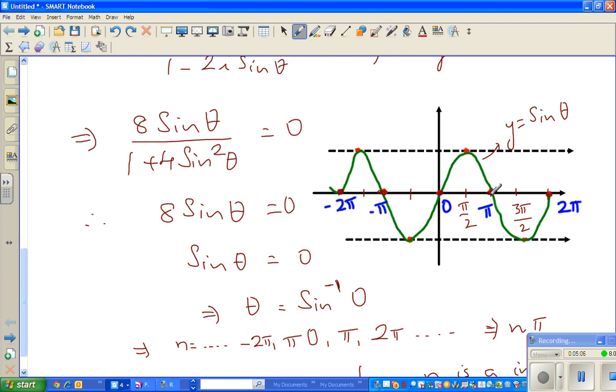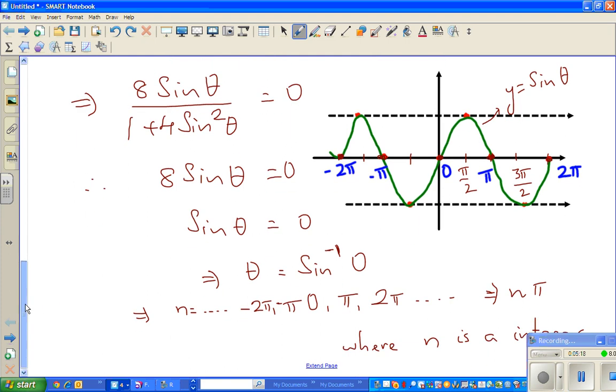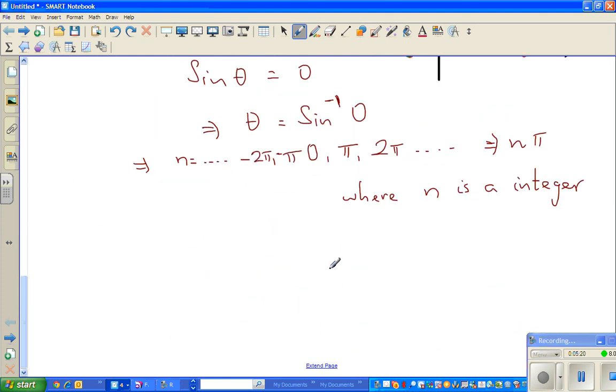Which is 0, π, 2π, 3π, 4π, and so on. If you go to the left, it's 0, -π, -2π, -3π, and so on. So if you want to write in the general form, we can see this implies θ equals...